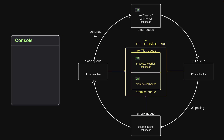Let's visualize the execution. When the call stack executes all statements in our code snippet, we end up with one callback in the next tick queue, one in the promise queue, and one in the timer queue. There is no callback in the IO queue yet as IO polling has not been completed — this we learned in the previous video. Now when there is no further code to execute, control enters the event loop.